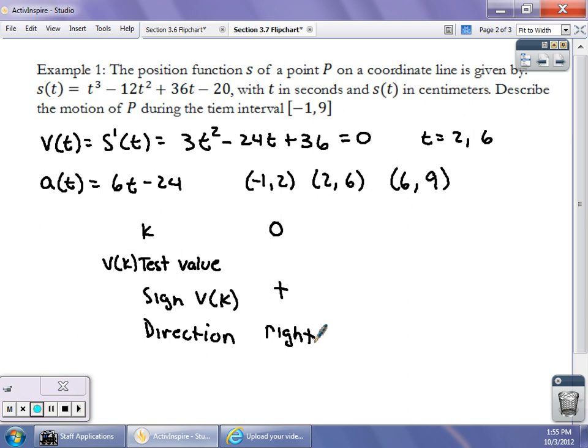On the interval from 2 to 6, I went ahead and used 3, and if I plug 3 in there, this is going to be 27 minus 72 plus 36. I don't need to know exactly what that exact value is, I just need to know it's negative. And that's going to tell me that my particle is moving to the left.